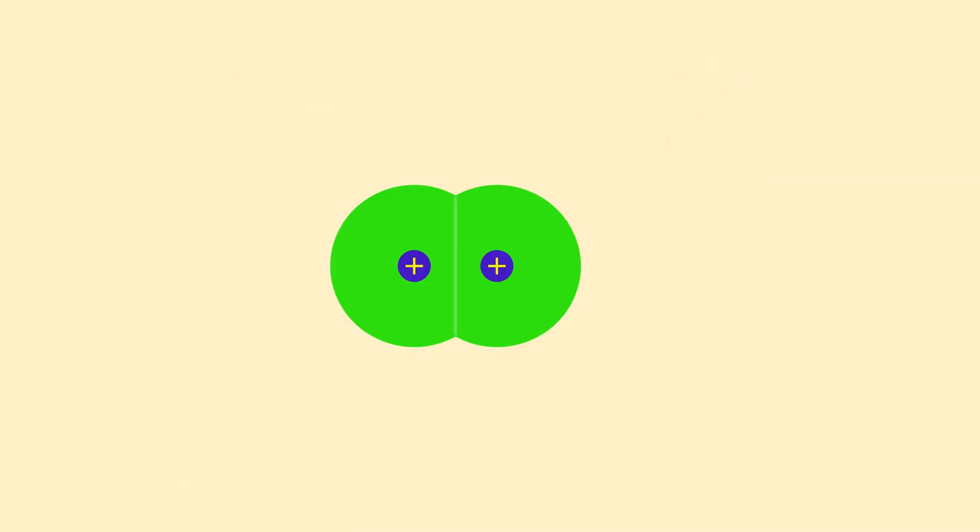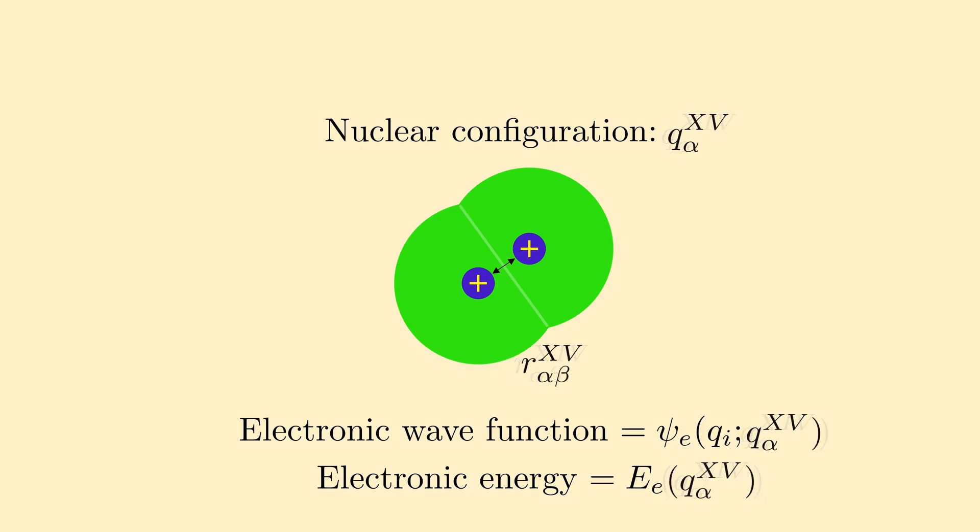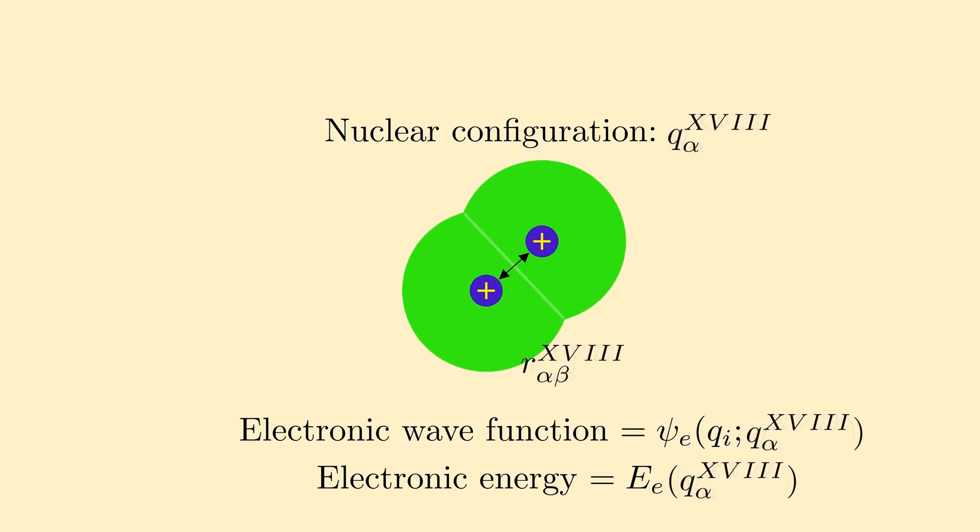Since the electrons move much faster than the nuclei, when the nuclei change their configuration slightly, the electrons immediately adjust to the change without requiring a relaxation time, with the electronic wave function and energies changing to values that depend on the new configuration. Thus, as the nuclei move or change configuration, the electronic energy varies smoothly as a function of the parameters defining nuclear configuration.